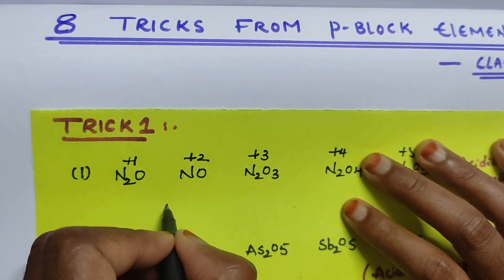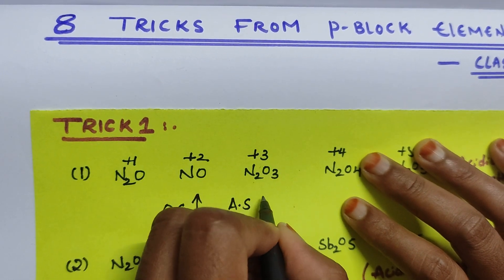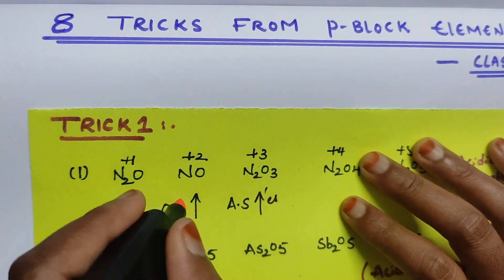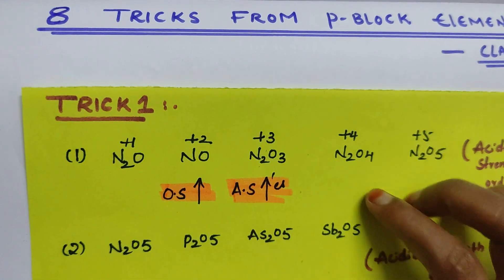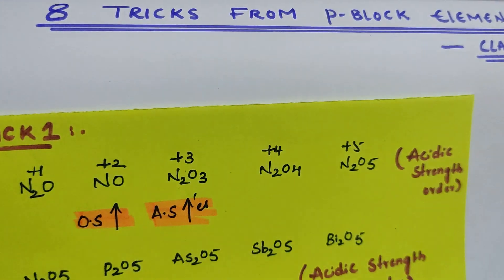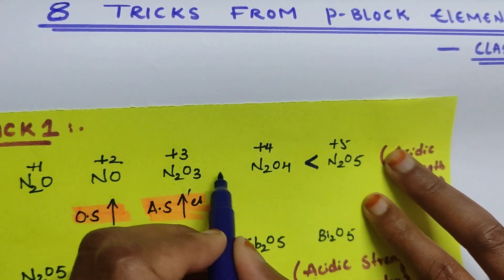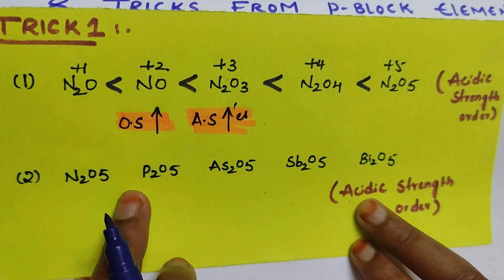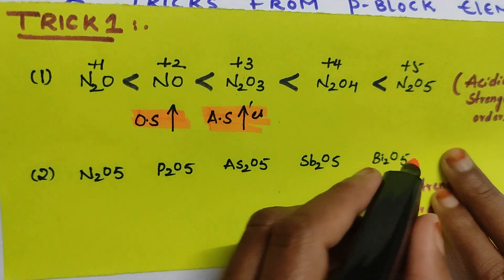As the oxidation state of the central atom increases, acidic strength also increases. This is the easiest way — as the oxidation state of the central atom increases, acidic character also increases. So N2O5 is having the highest oxidation state, so it is the most acidic. Coming to N2O5, P2O5, As2O5, Sb2O5 — if you observe this question, the central atom is different.